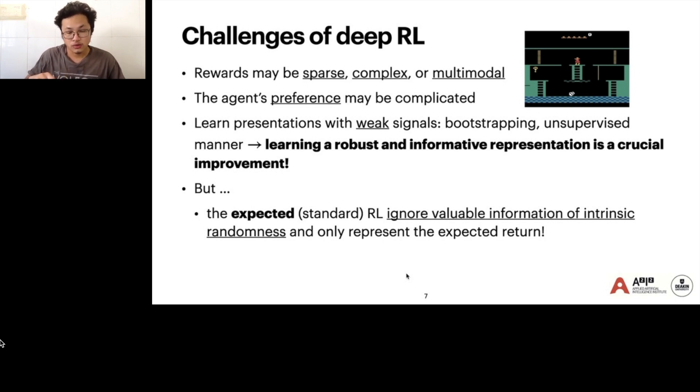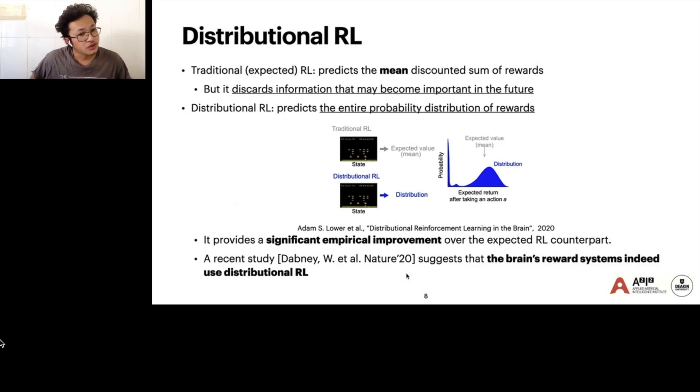However, the expected reinforcement learning ignores the value function of the intrinsic randomness of the return. So there's another approach in reinforcement learning called distributional reinforcement learning which tries to predict the entire probability distribution of the rewards. And it provides significant empirical improvement over the traditional reinforcement learning, and a recent study in Nature suggests that the brain's reward system actually uses distributional reinforcement learning.